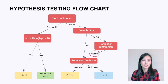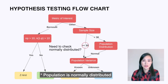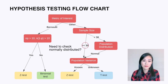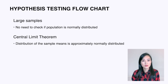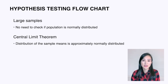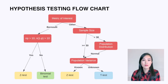You may wonder: do we care if the proportion is normally distributed for large samples? We don't, because the central limit theorem tells us that the sample mean follows a normal distribution. We don't need to worry about whether or not the population is normally distributed for a large sample.